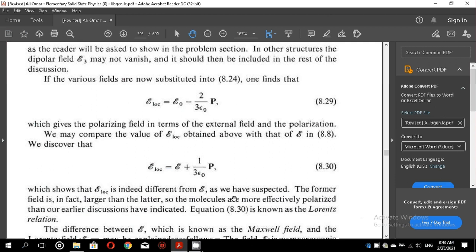Further, we may compare the value of E local obtained above with that of E in equation 8.8. We discover that E local is E plus 1 over 3 epsilon 0 p, which follows that E local is indeed different from E as we have suspected. The former field is in fact larger than the latter. So the molecules are more effectively polarized than our earlier discussion have indicated. Equation 8.30 is known as the Lorentz relation.